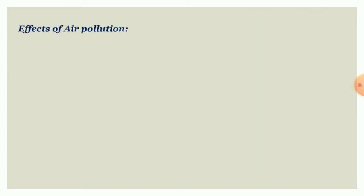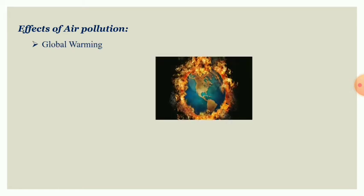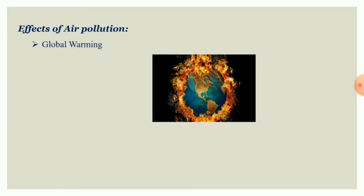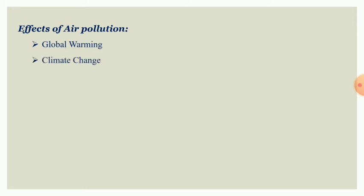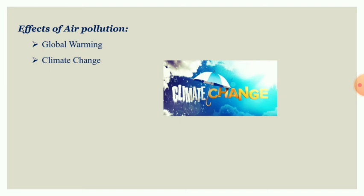Now let us see about the effects of pollution on the environment. The first one is global warming. Global warming is the rise in the earth's temperature and is one of the most worrying effects for scientists and environmentalists. Most of these emissions are produced by industries. The next one is climate change, which is a consequence of global warming. When the temperature of the planet increases, there is a disturbance in the usual climatic cycles, the mass of the poles is melting, and this leads to flooding and the rise of sea levels.